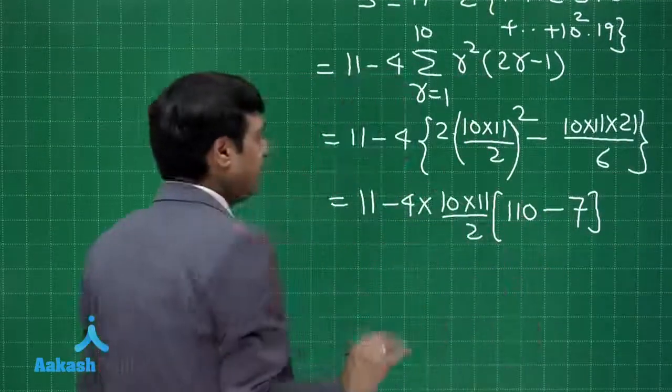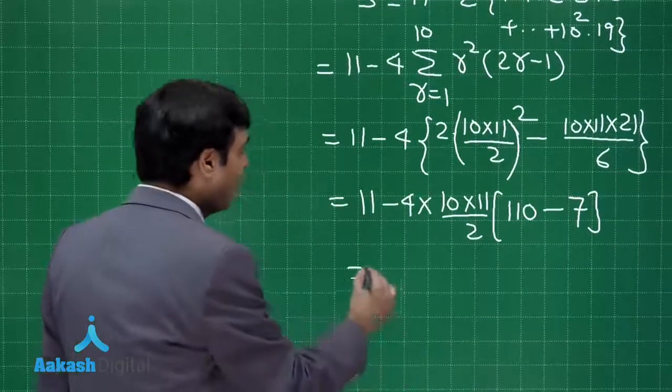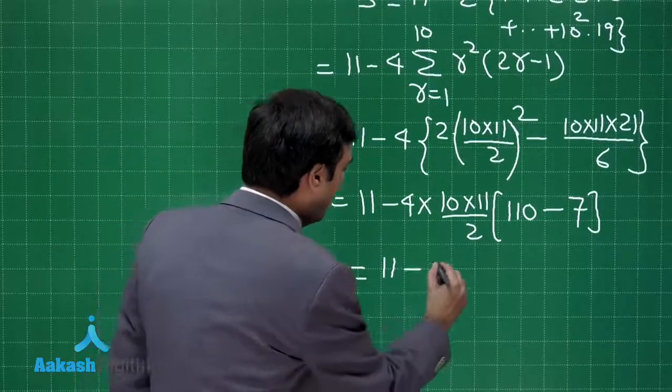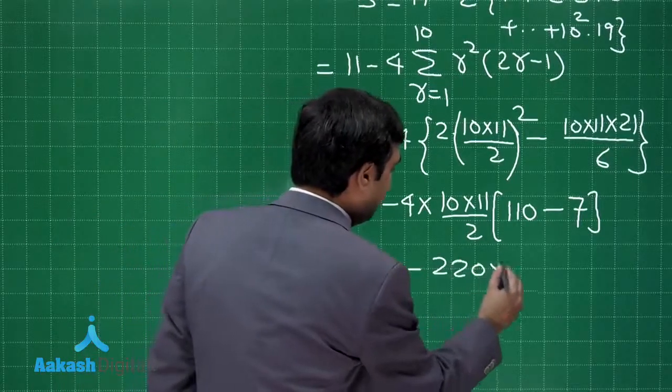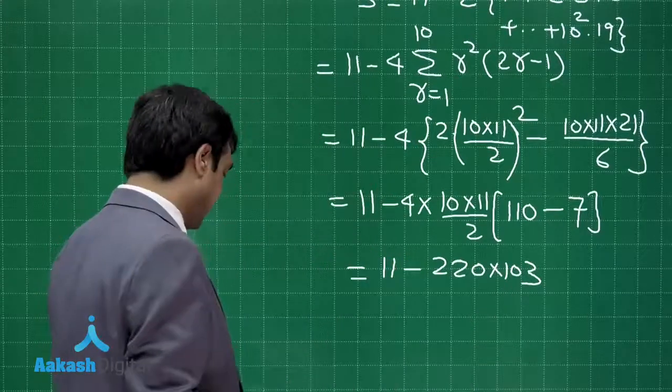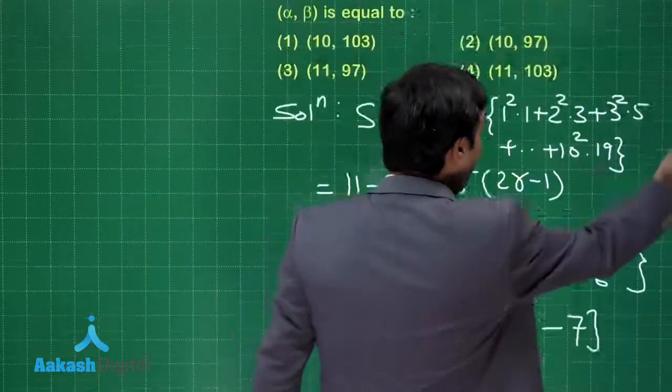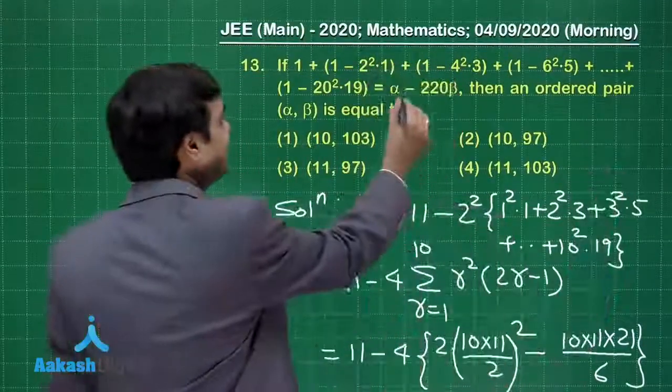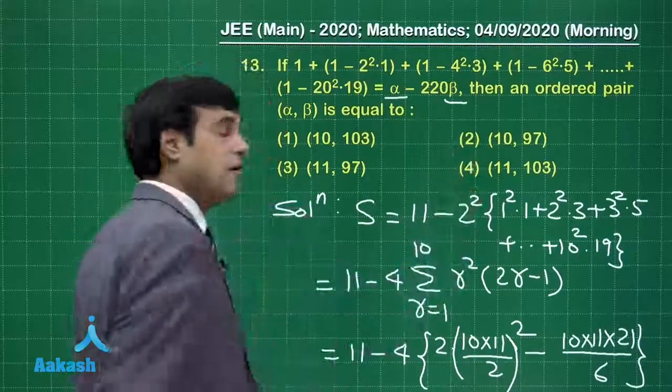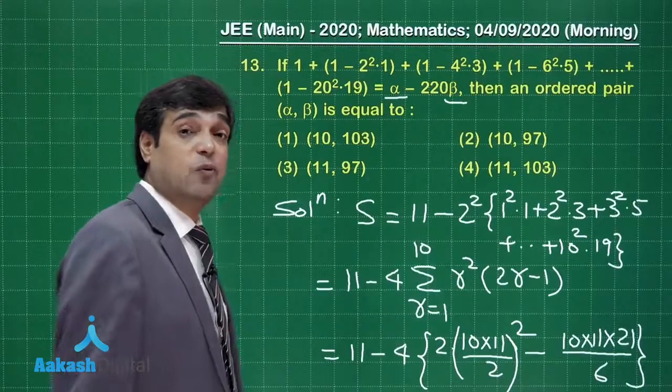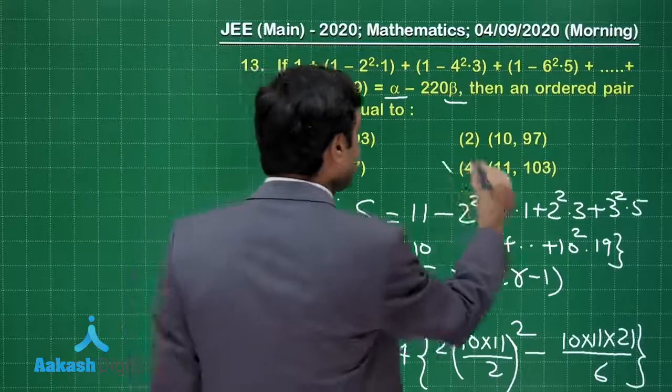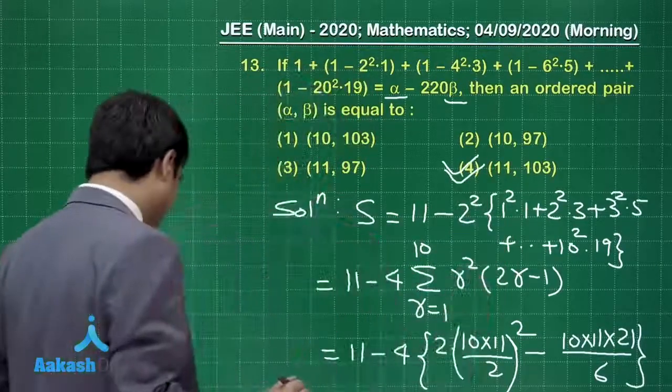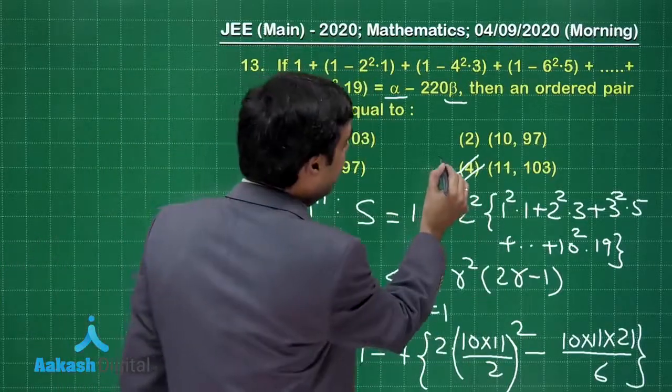Some simplification, some calculation work is required. So this comes out to be 11 minus 220 into 103. I have tried to convert it into the required form as given. So alpha and beta we can say are 11 and 103, which is given here as option number 4.